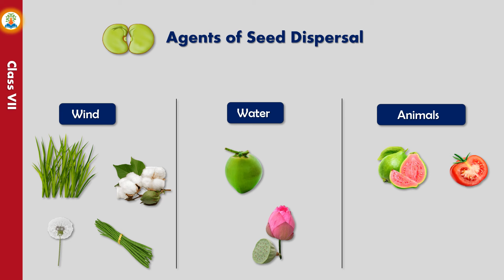The seeds of many fruits such as guava and tomato are eaten by humans and other animals. The seeds of these fruits pass undigested through the digestive tract and get dispersed when excreted. Some animals such as squirrels and mice also help in dispersal by storing nuts in their burrows under the soil. When conditions become favorable, these seeds germinate to give rise to new plants.